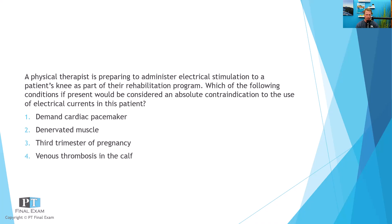As per usual, I'll read you the question and then give you a moment to respond. Here we go: A physical therapist is preparing to administer electrical stimulation to a patient's knee as part of their rehabilitation program. Which of the following conditions, if present, would be considered an absolute contraindication to the use of electrical currents in this patient?